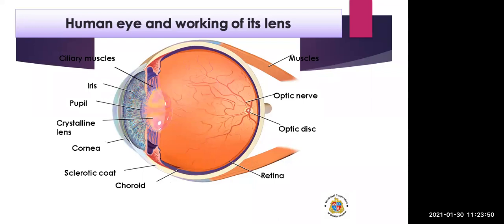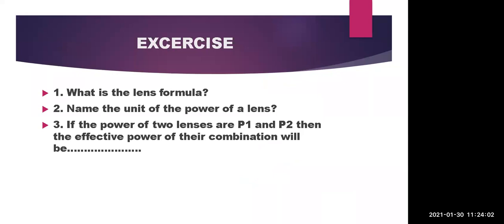This is the structure of the human eye; we will study its working in the next lecture. Now let's do an exercise. The lens formula is showing the relationship between the distance of the object, the distance of the image, and the focal length. The formula is 1/V − 1/U = 1/F.